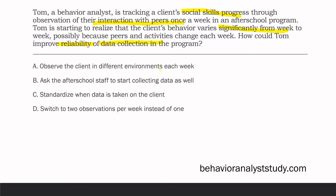Tom is seeing that the client's behavior varies significantly week to week because peers and activities change — so the data aren't going to be reliable because you're measuring something different every week. How could Tom improve reliability? A: observe the client in different environments each week — that likely won't help, since putting the client in a different environment introduces more stimuli and variables, and peers and activities may still change. B: ask the after-school staff to start collecting data as well — the data aren't necessarily the issue; they'd still be collecting data on a behavior that is always changing.